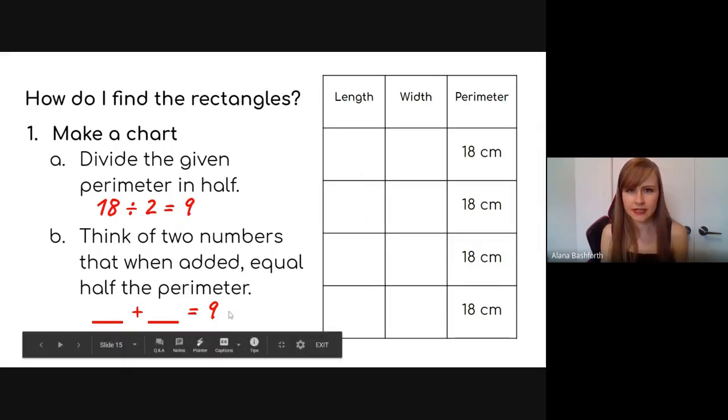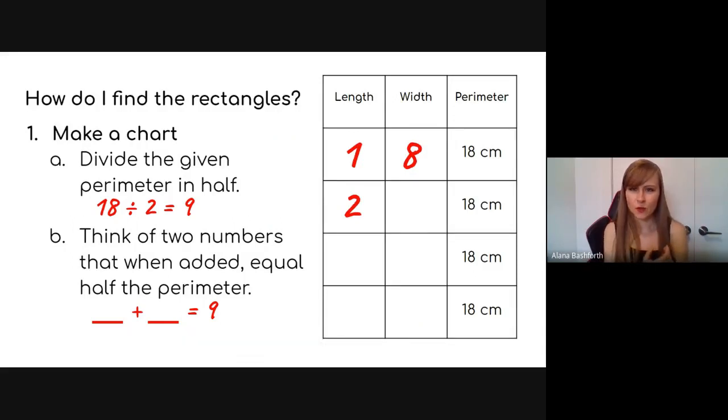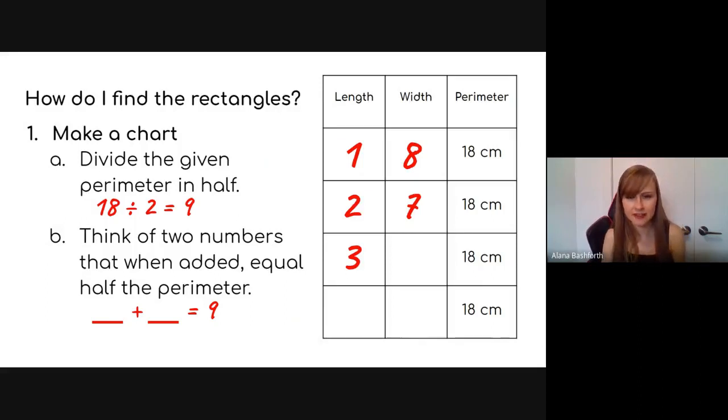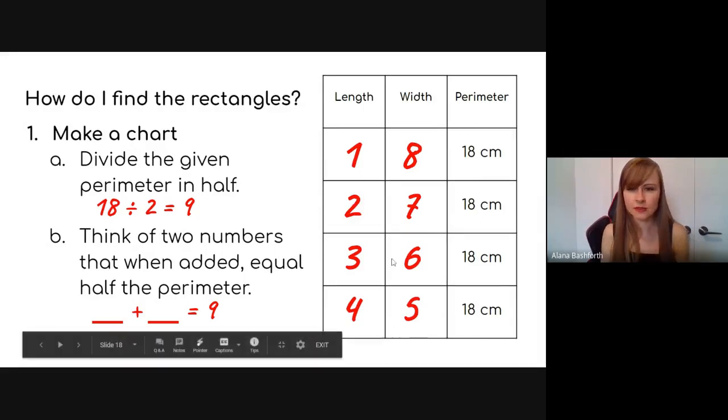So now we're thinking what plus what equals nine. And I always start with one because that's easy. So one plus what equals nine? Well, one plus eight equals nine. Then go to two because that's the simplest way. Two plus what equals nine? Two plus seven equals nine. Then go to three. Three plus what equals nine? You got it. It's six. And then the last one, just go up. Four plus what equals nine? It's five.